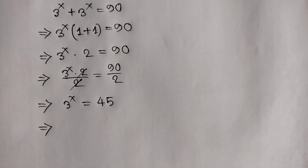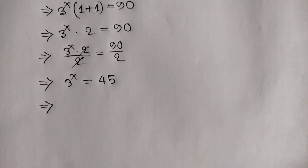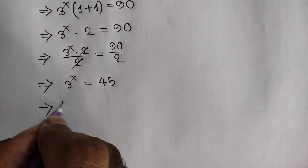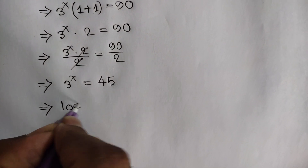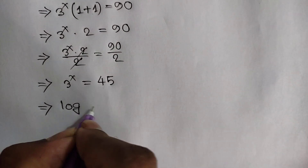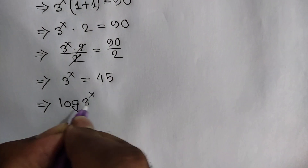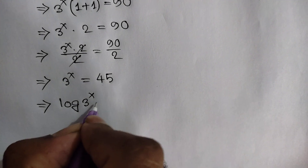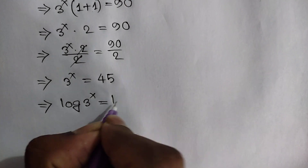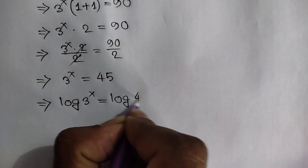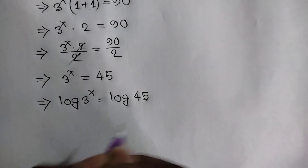Now taking log of both sides, we can write log of 3 to the power x is equal to log of 45.